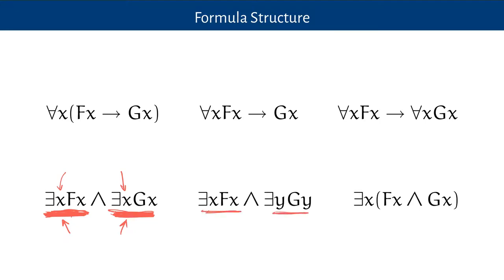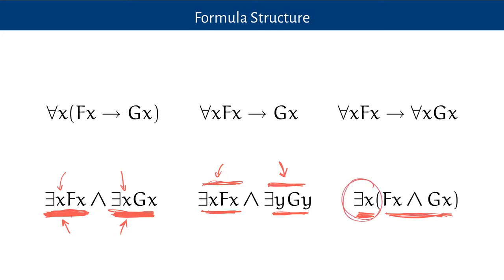Another way of writing the same statement, true in exactly the same circumstances, is to use different variables: 'there is an x, Fx' and 'there is a y, Gy' — something is a frog and something is green. There's no requirement that those two somethings be the same thing. If I wanted to say that something was both a frog and green, I'd write it differently: 'there is something, and it's a frog, and it's green' — the quantifier is now outside the conjunction. I'm saying: there is something, and what do I know about it? It's a frog, and it's green.